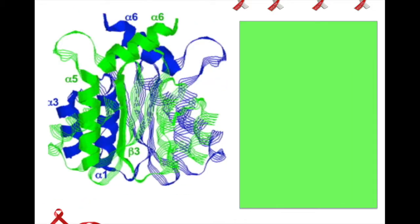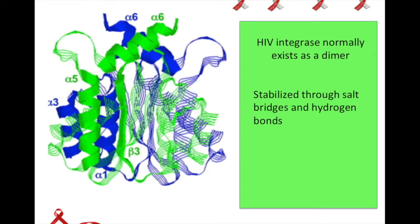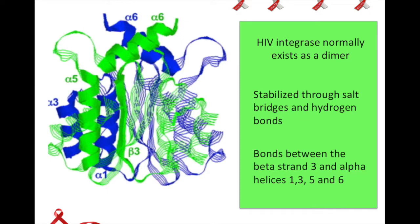HIV integrase normally exists as a dimer, and this dimer is stabilized through salt bridges and hydrogen bonds between beta strand 3 and alpha helices 1, 3, 5, and 6.